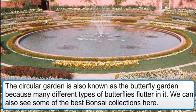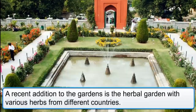The circular garden is also known as the Butterfly Garden because many different types of butterflies flutter in it. We can also see some of the best bonsai collections here. A recent addition to the gardens is the Herbal Garden, with various herbs from different countries.